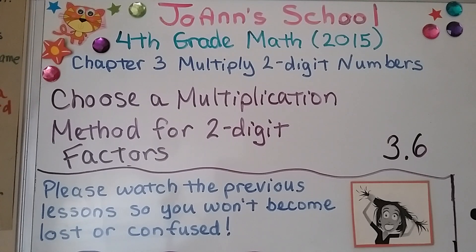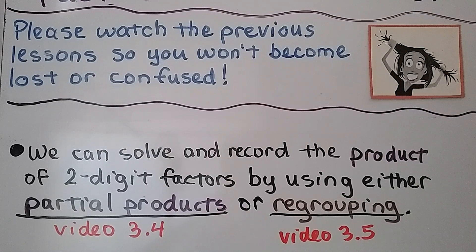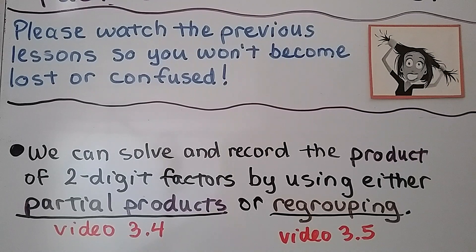Lesson 3.6: we're going to choose a multiplication method for two-digit factors. We can solve and record the product of two-digit factors by using either partial products, which we learned in video 3.4, or regrouping, which we learned in video 3.5. Both are linked in the description, so if you haven't seen them, please watch them so you don't become lost or confused. We will review them quickly in this video, but hopefully you have seen them already.